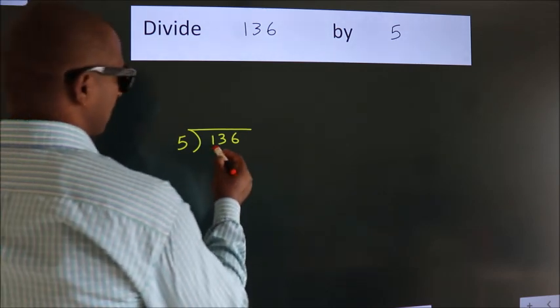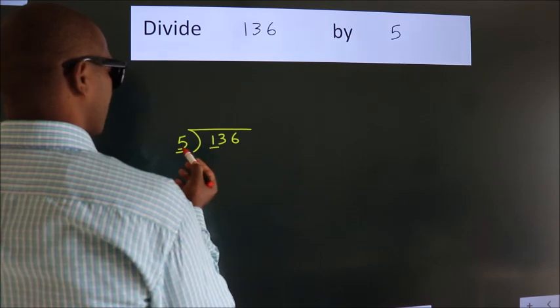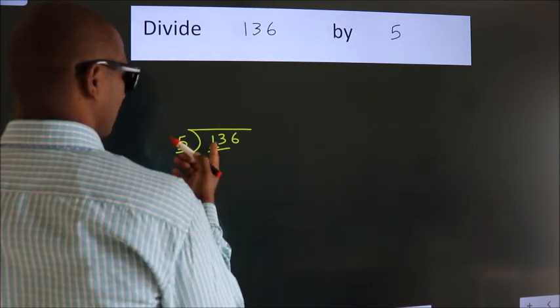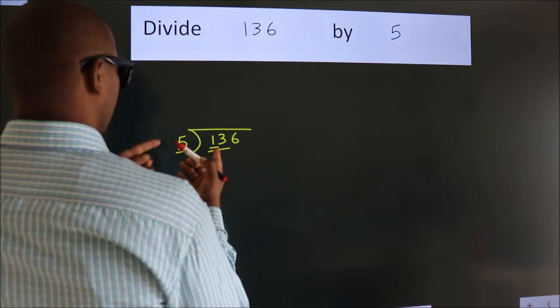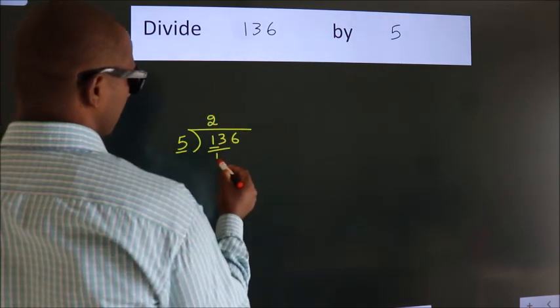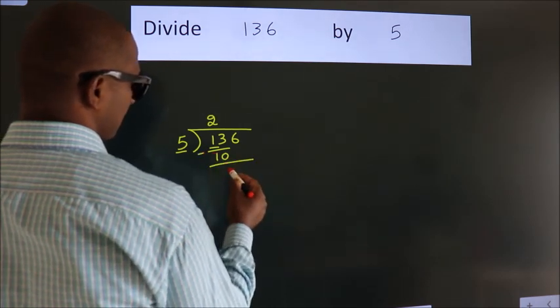Here we have 1, here 5. 1 is smaller than 5, so we should take two numbers, 13. A number close to 13 in the 5 table is 5 twos, 10. Now we should subtract. We get 3.